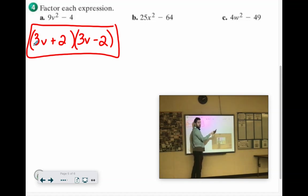Oh, two terms with a minus. I can square root 25x squared, that's 5x. I can square root 64, that's 8.